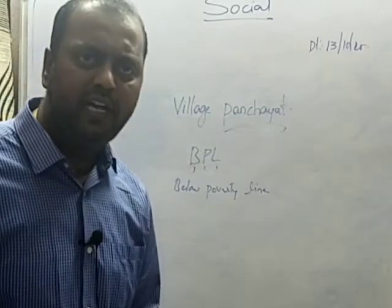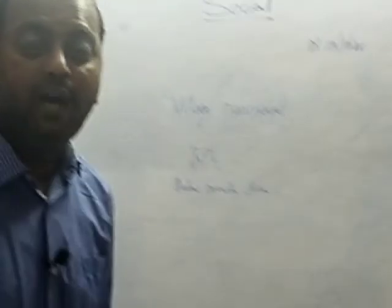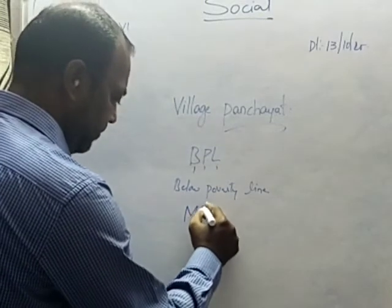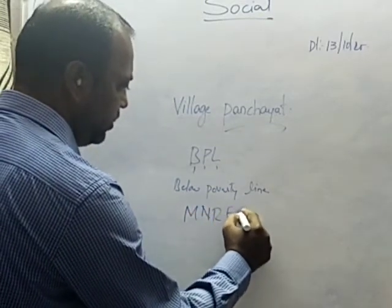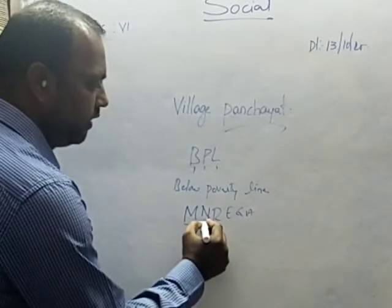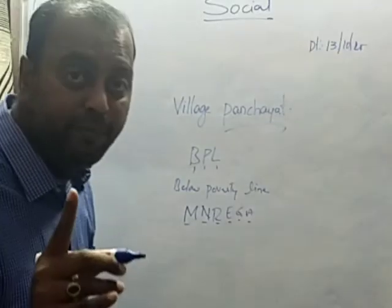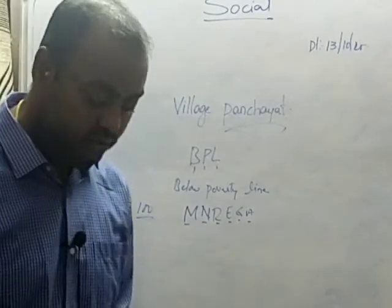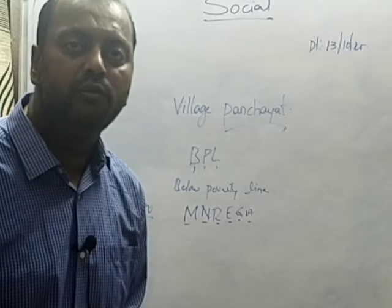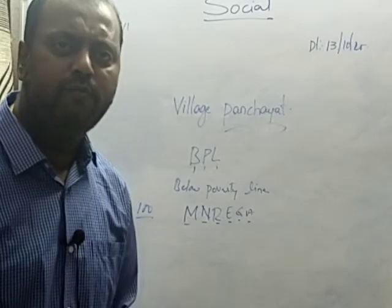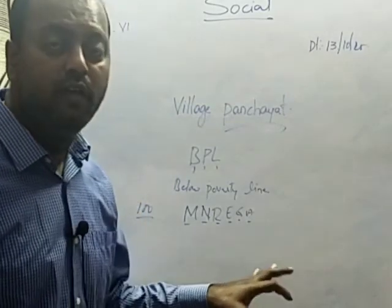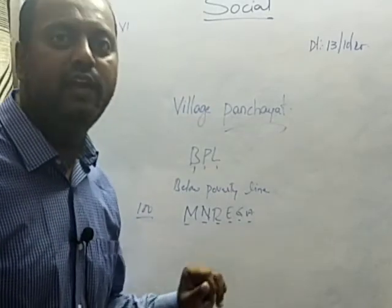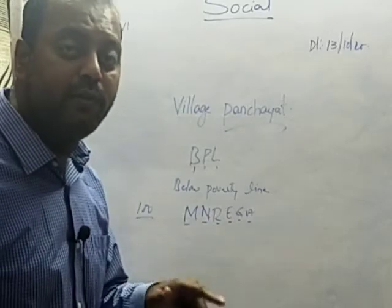Similarly, the Grama Panchayat should also oversee work conducted under the Mahatma Gandhi National Rural Employment Guarantee Act — MNREGA. Under MNREGA, BPL families are given 100 days of work per year. The government will pay nearly 200 rupees per day for men and 180 rupees for women by showing any kind of work. Even if agricultural work is not available, ensuring these people get wages is the responsibility of the Grama Sabha and Grama Panchayat.